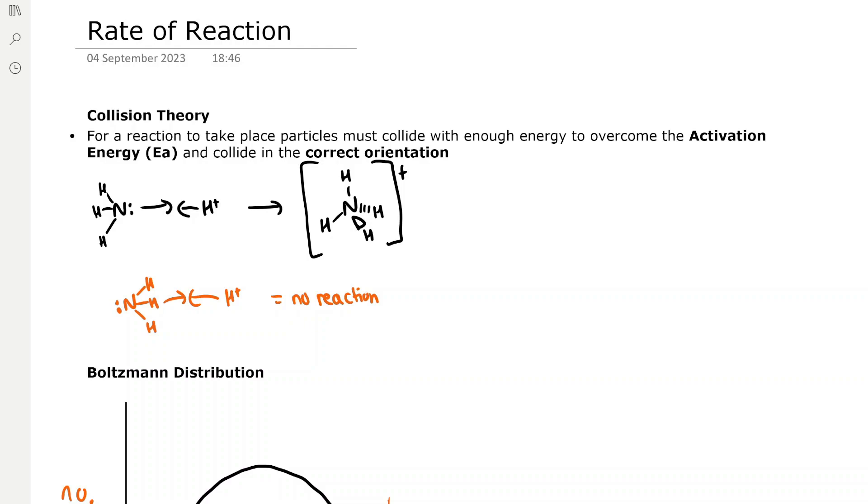Collision theory. For a reaction to take place, particles must collide with enough energy to overcome the activation energy, which we represent as Ea, and collide in the correct orientation. You can see that here we've got ammonia reacting with H plus ions, and when the lone pair on the nitrogen atom aligns with the H plus ion, they can react to form ammonium ions, NH4 plus. But if the lone pair is facing away from the H plus ions and they collide, they won't react, and so reactions won't take place if they're not in the correct orientation.